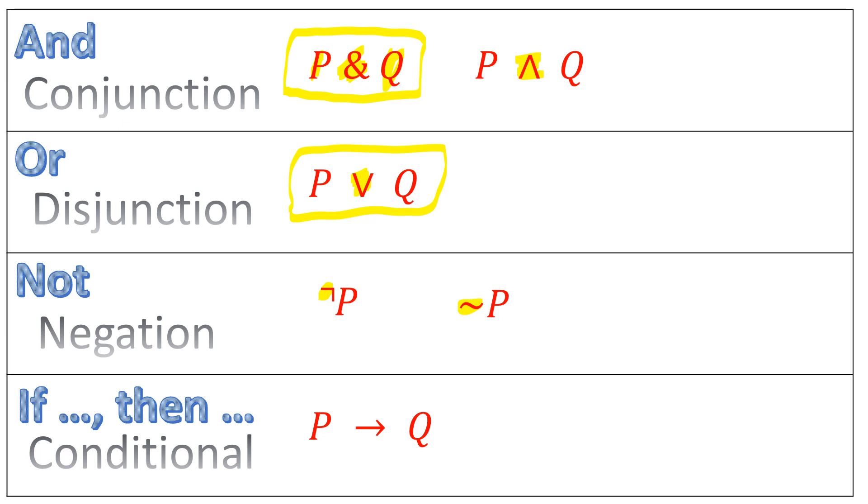And then we have the conditional, the hypothetical, if P, then Q. We symbolize the conditional with an arrow. And for the conditional, we call the P portion the antecedent, the Q portion the consequent.